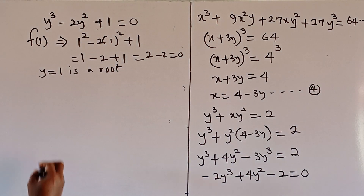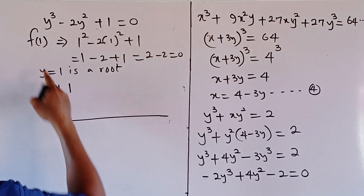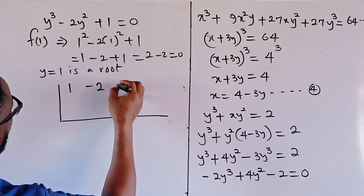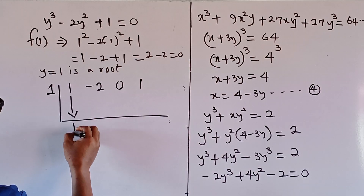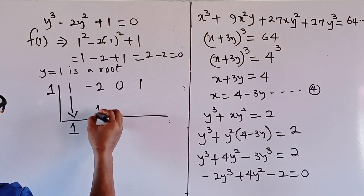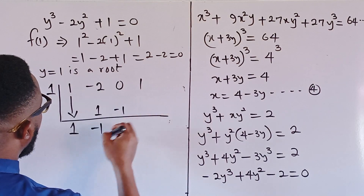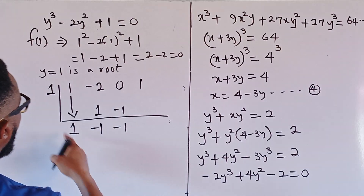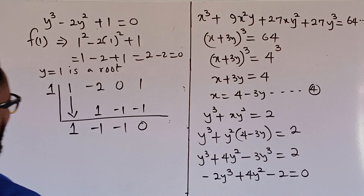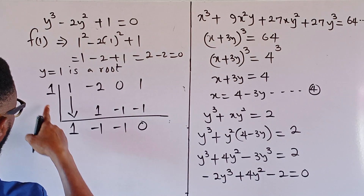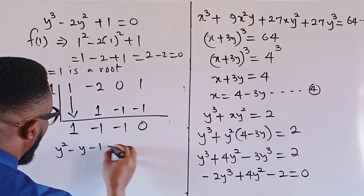The next thing I shall do is use synthetic division. The coefficients are 1 for y³, −2 for y², 0 for y (since there is no y term), and 1. Sticking in 1: bring down 1; 1×1=1, −2+1=−1; 1×(−1)=−1, 0+(−1)=−1; 1×(−1)=−1, 1−(−1)=0. So the result is the quadratic y² − y − 1 = 0.